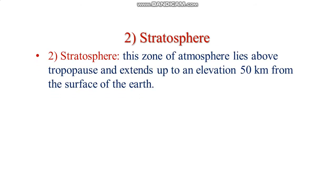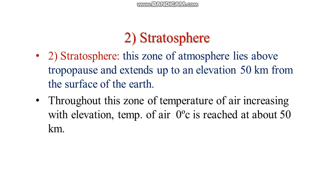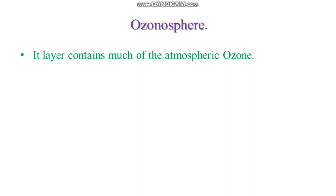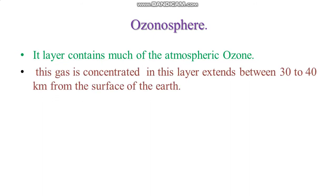The stratosphere lies above the tropopause and extends up to an elevation of 50 km from the surface of the earth. Throughout this zone, the temperature of air increases with elevation, reaching 0 degrees Celsius at about 50 km. The ozonosphere is located within the stratosphere and contains much of the atmospheric ozone. This gas is concentrated between 30 km to 40 km from the surface of the earth, and this layer is known as the ozonosphere.